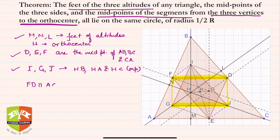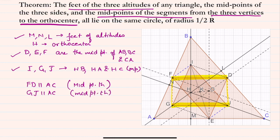Clearly FD is parallel to AC — why? By the midpoint theorem, since F and D are midpoints and AC is the base. Similarly, GJ is also parallel to AC, again by the midpoint theorem, because G is the midpoint of HA and J is the midpoint of HC, so GJ will be parallel to AC.